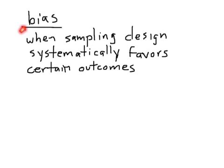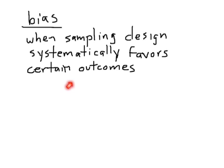Speaking of bias — when I've been saying sampling designs are good or bad, what I really mean is they are not biased or they are biased. Bias means when your sampling design systematically favors certain outcomes. In other words, something you're doing in the way you're picking your sample causes the data not to be representative as a whole. For example, convenience sampling — if you just ask the people around you, they're going to be like you and your results might not represent your population. A voluntary response sample is often biased because certain people who have strong opinions are overstated in the sample.